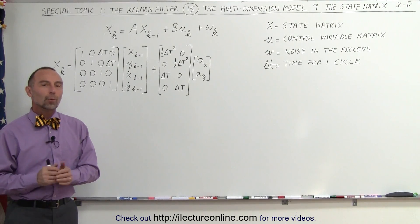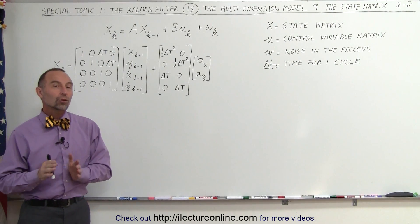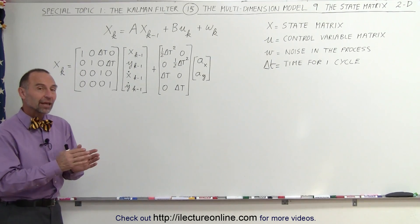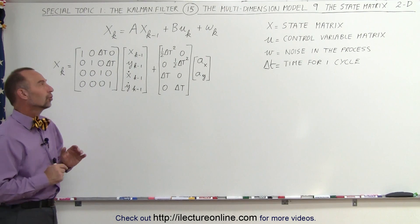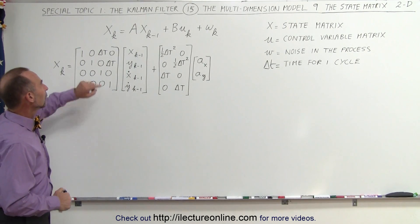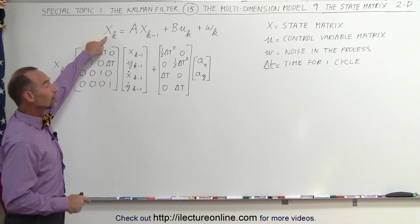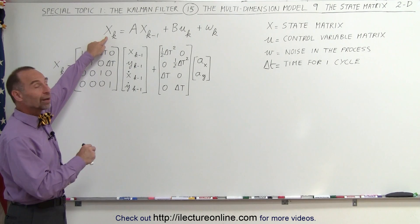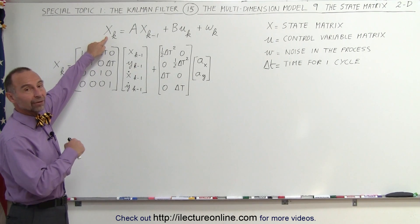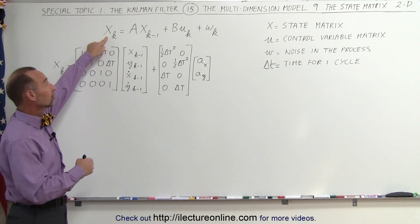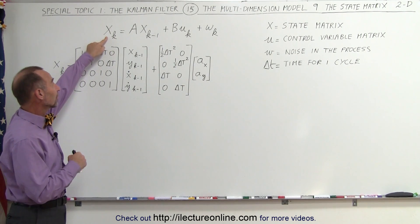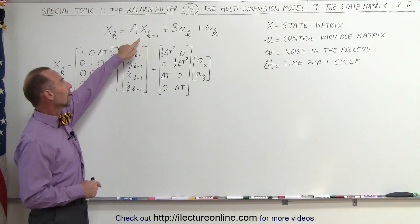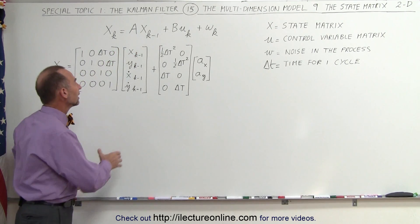Welcome to ElectronLine. We're now ready to show you how to convert from the previous state to the current state. Here we want to figure out what the x and y position, the x and y velocity — the velocity in the x direction and velocity in the y direction — is of the current state based upon what it was in the previous state.